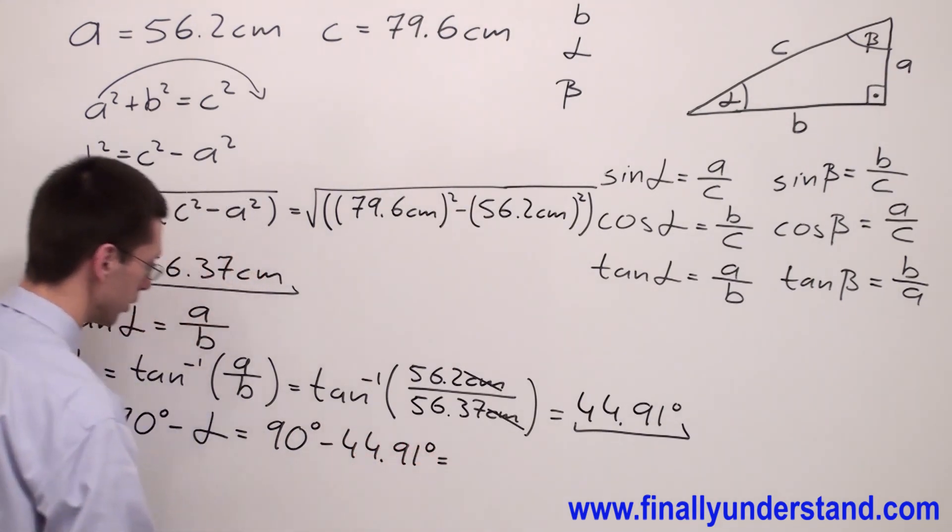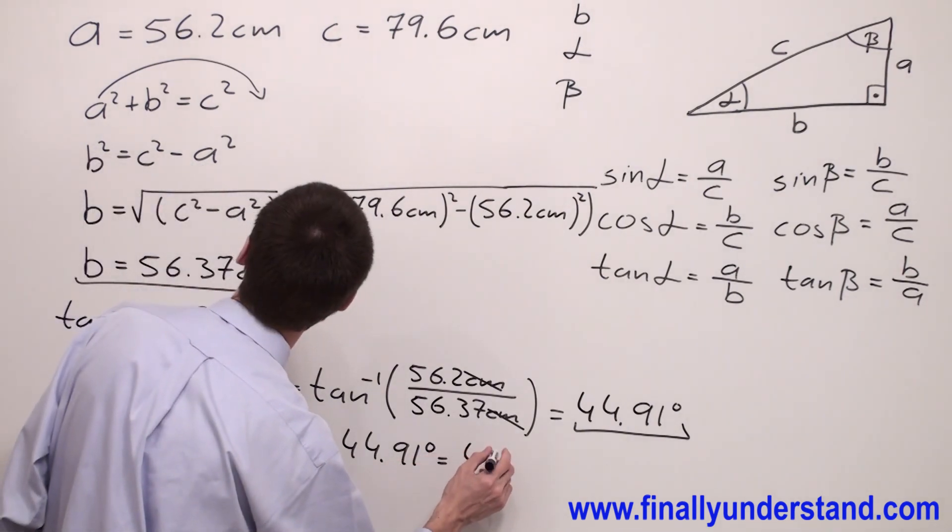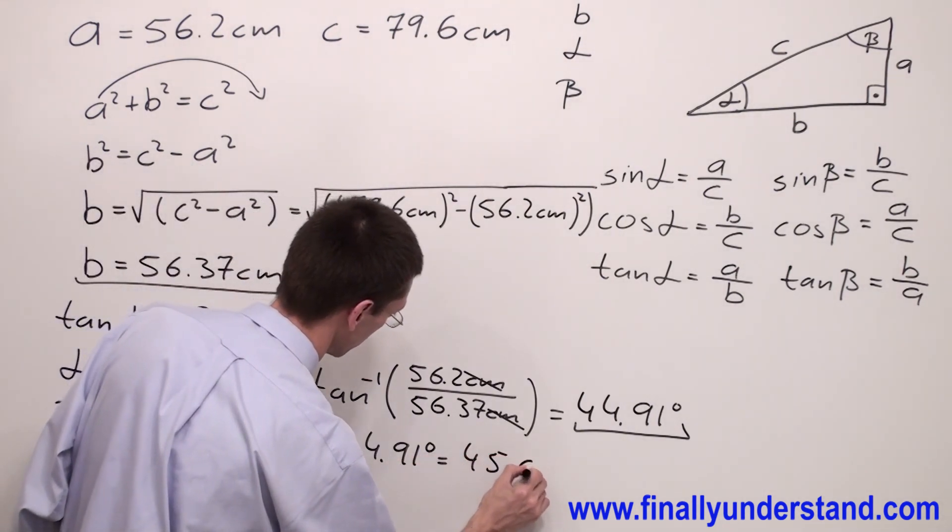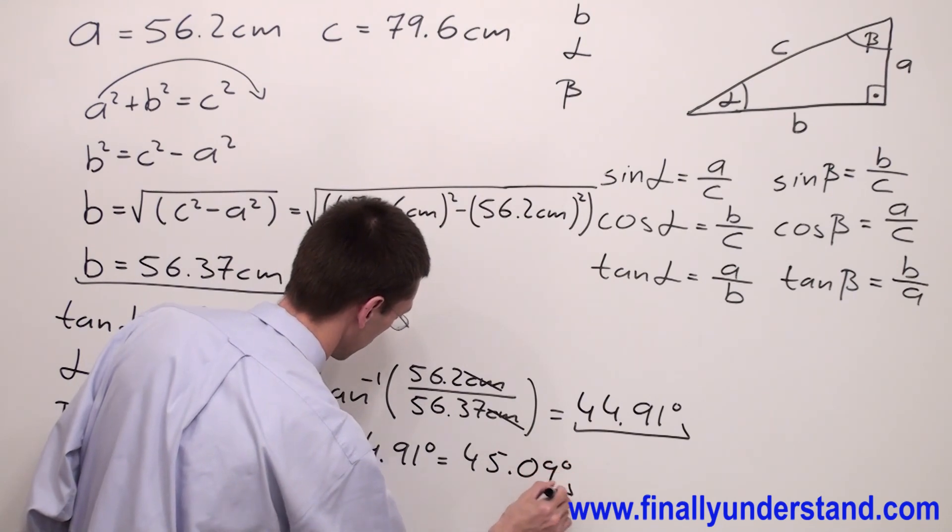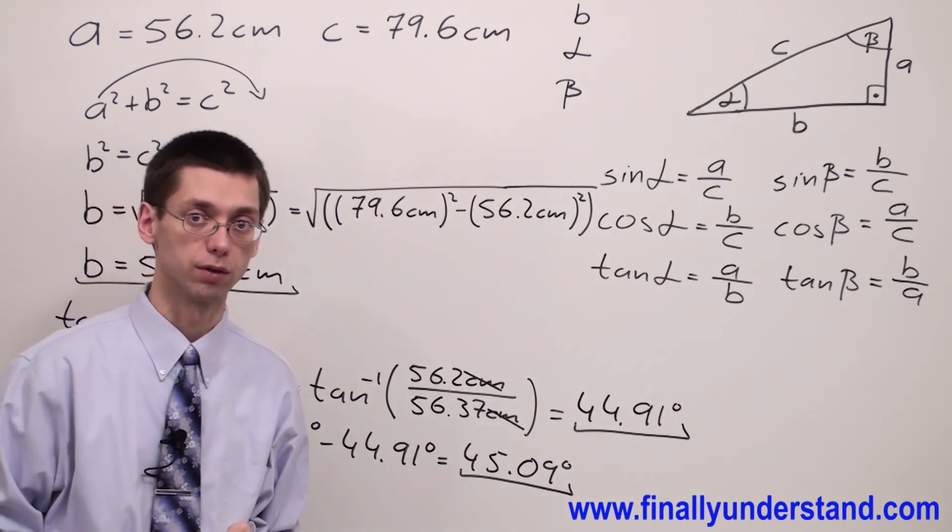And you are going to have 90 degrees minus 44.91 degrees. This is equal to 45.09 degrees. We have the length of the three sides of the triangle. We found angle alpha and angle beta, so the problem is solved.